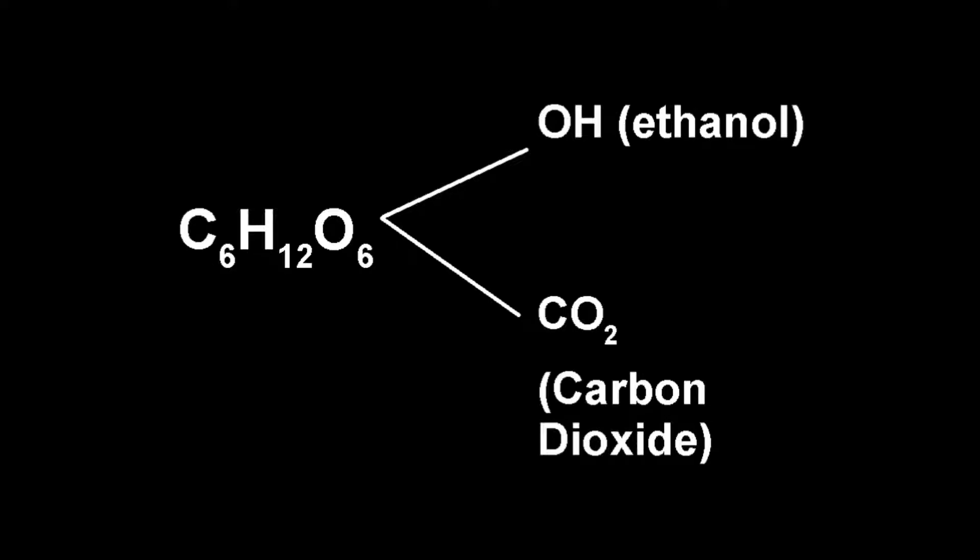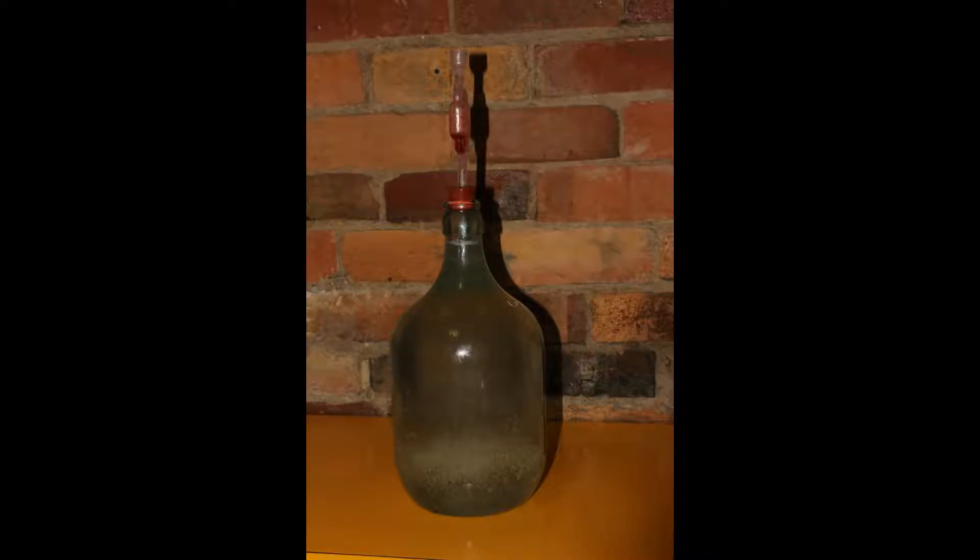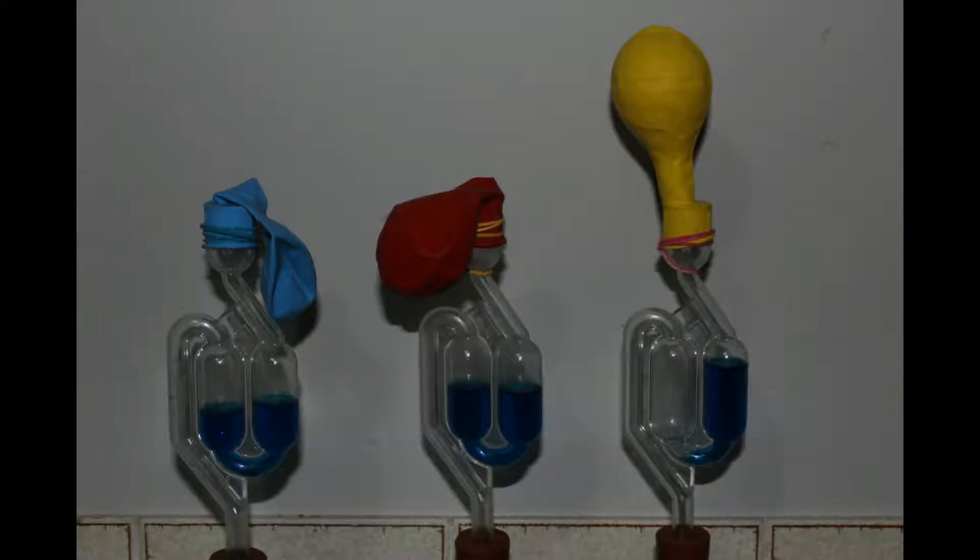This is one of several methods available to the home brewer. This is the simplest schematic of the chemical equation that will be used. On the left is the sucrose and water. On the right are the products, ethanol and carbon dioxide.